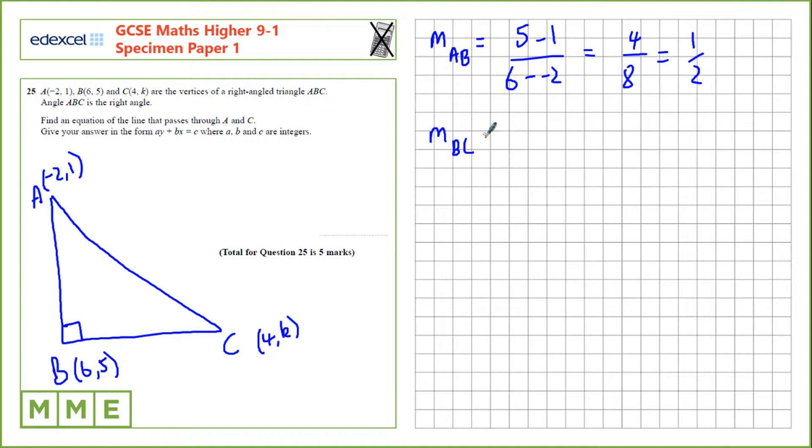The gradient of B to C is perpendicular to that line, so it's the negative reciprocal of this value, that's minus 2.